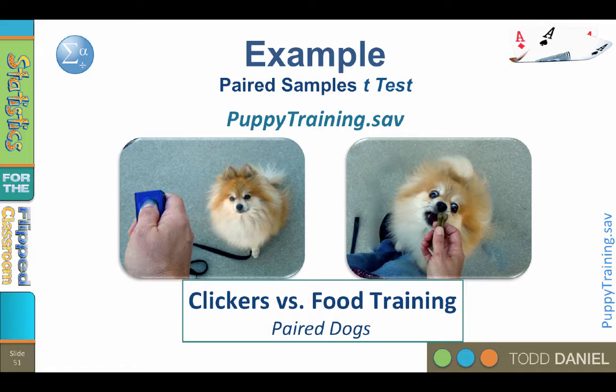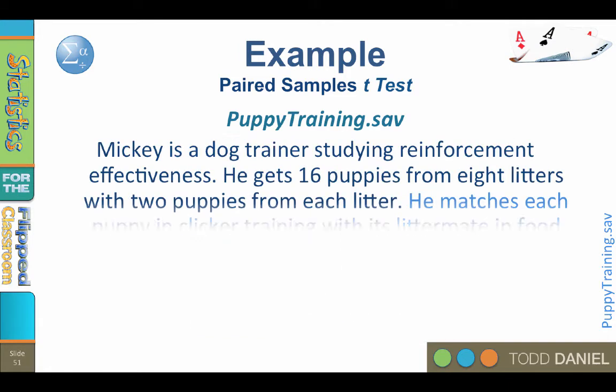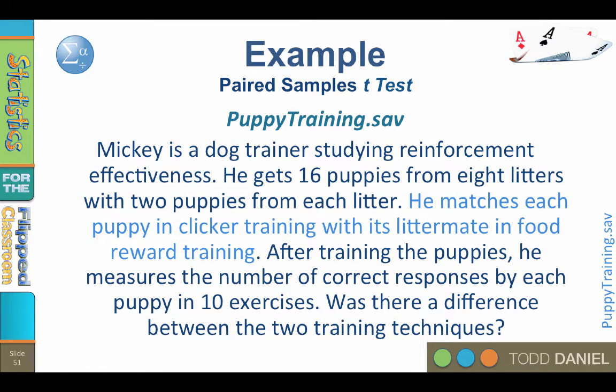Because this is a paired samples t-test, the researcher is going to use matched pairs of dogs in each group. Mickey is a dog trainer studying reinforcement effectiveness. He gets 16 puppies from 8 litters, with 2 puppies from each litter. He matches each puppy in clicker training with its littermate in food reward training. After training the puppies, he measures the number of correct responses by each puppy in 10 exercises. Was there a difference between the two training techniques?